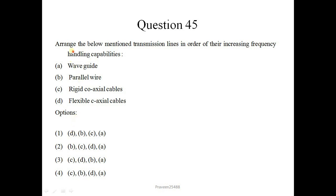Now question number 45. Arrange the below mentioned transmission lines in order of their increasing frequency and ending capabilities. So waveguide, parallel wire, rigid coaxial cables, flexible coaxial cables. So options are, correct sequence is, what is parallel wire, correct answer is 2. This first is parallel wire, then rigid coaxial cable, then flexible coaxial cable, then last is waveguide.